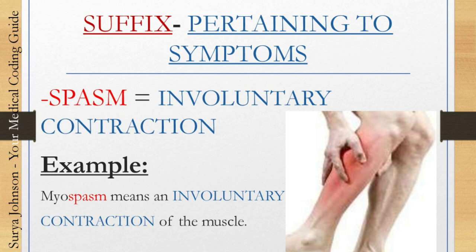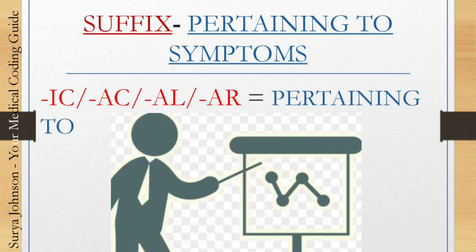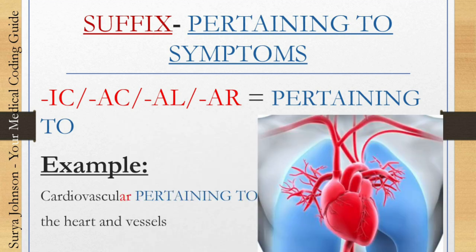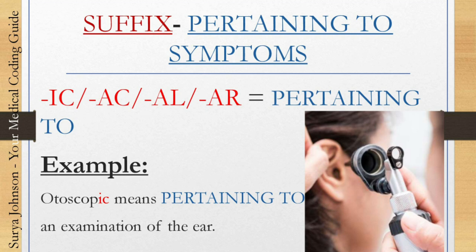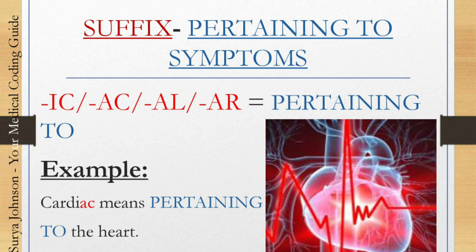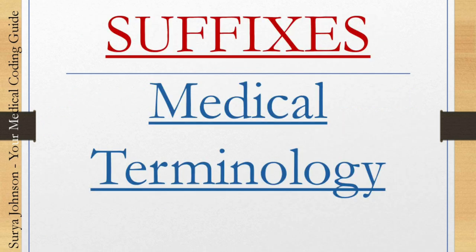The next suffixes pertaining to symptoms are '-ic,' '-ac,' '-al,' and '-ar' — they all mean the same thing: pertaining to. For example, cardiovascular means pertaining to the heart and vessels. Intercostal means pertaining to between the ribs. Otoscopic means pertaining to an examination of the ear. And cardiac — the '-ac' ending — means pertaining to the heart.